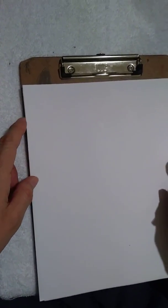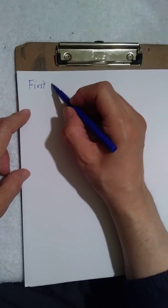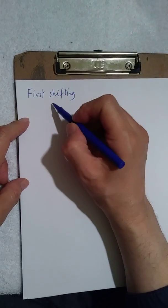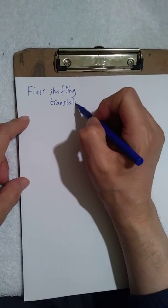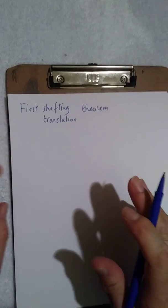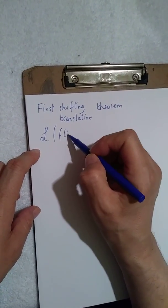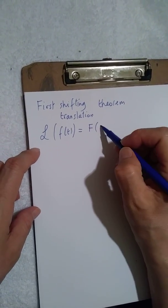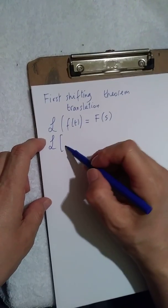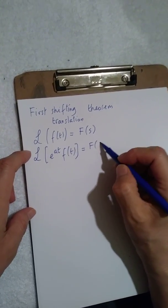We're going to go over and apply some theorems on Laplace transforms. The first one is called the first shifting theorem or first translation theorem. Here's how the theorem works — we're not going to give the proof in this video. If the transform of some function f(t) is equal to capital F(s), then the transform of e^(at)·f(t) is F(s minus a).